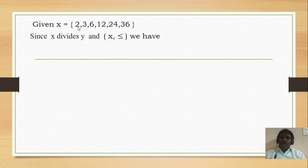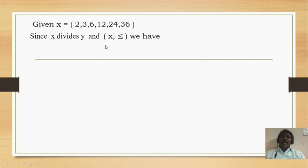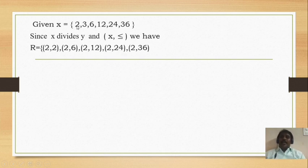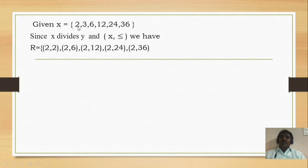If we take 2, then 2 must divide some values. Taking 2,2: yes, remainder 0. Taking 2,3: no, remainder not 0. Taking 2,6: yes. Taking 2,12: yes. Taking 2,24: yes. Taking 2,36: yes. So 2 divides 2, 2 divides 6, 2 divides 12, 2 divides 24, and 2 divides 36. Similarly for 3: 3 divides 3, 3 divides 6, 3 divides 12, 3 divides 24, and 3 divides 36, all giving remainder 0.